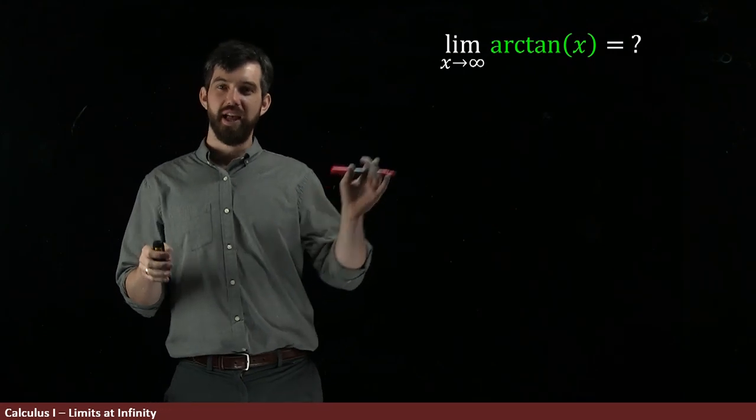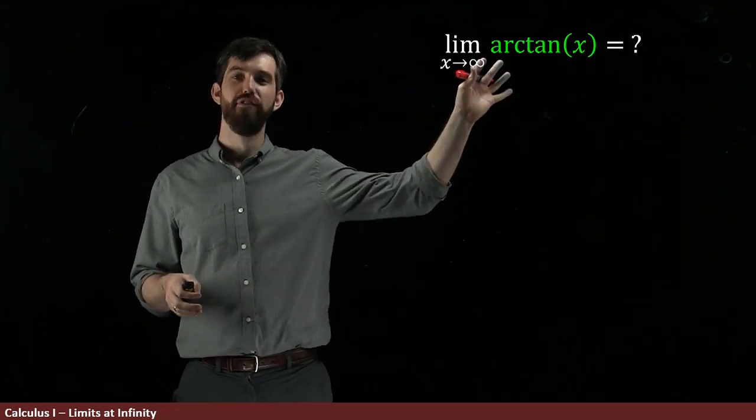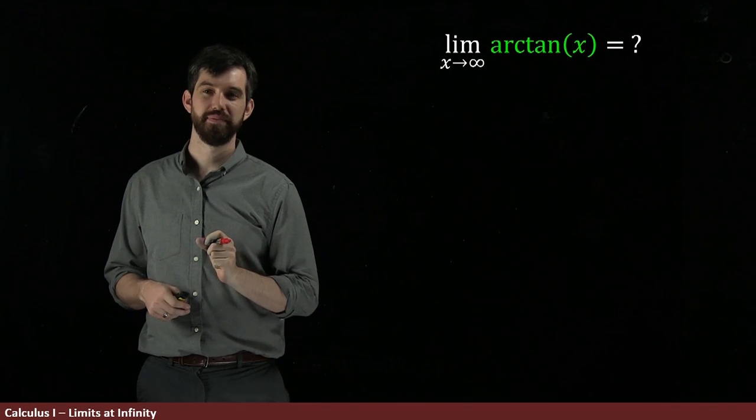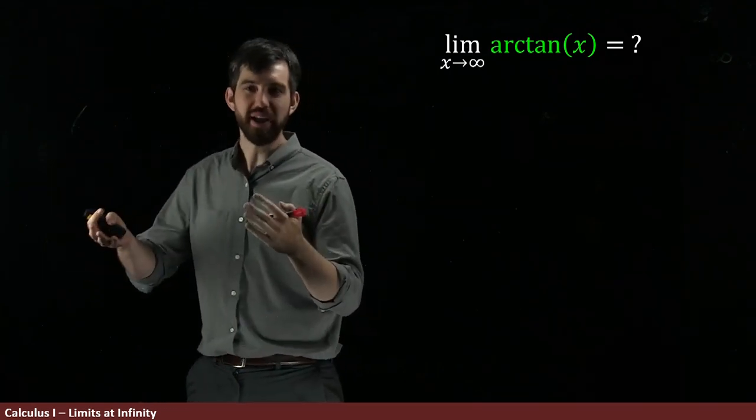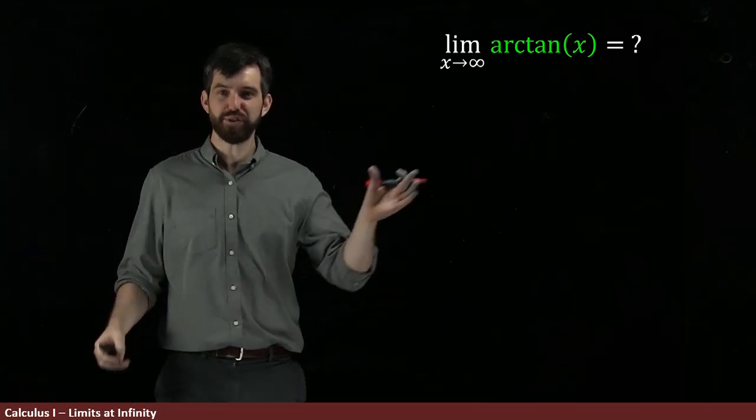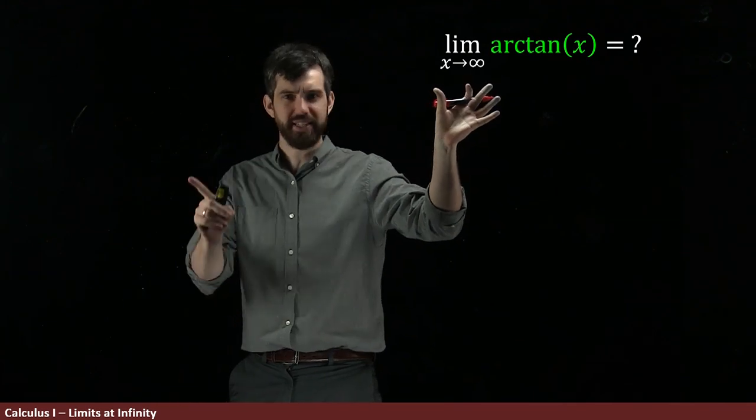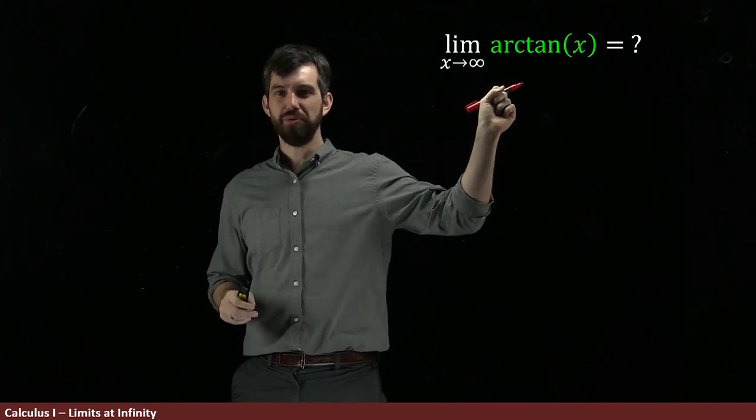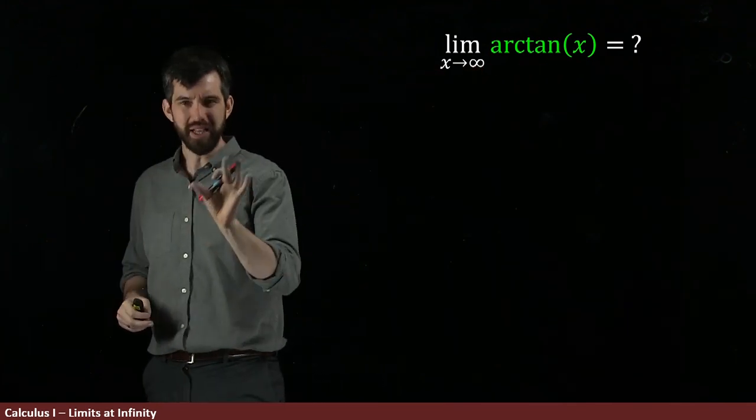Let us compute the limit as x goes to infinity of arctangent of x. So there's a couple points here that might cause a little bit of problems. First of all, x goes to infinity - we haven't seen that before. And then also arctangent of x. What exactly is that?